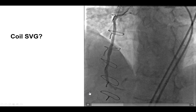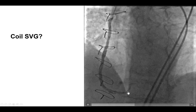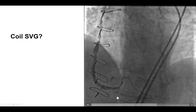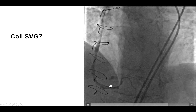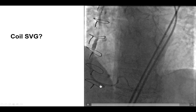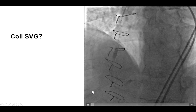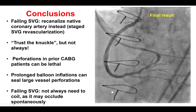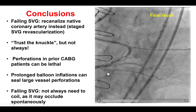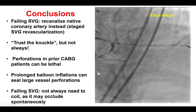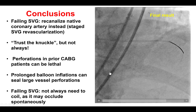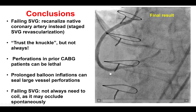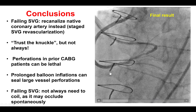We debated about occluding the saphenous vein graft. There was some flow, but not much competitive flow, and there was significant disease in the distal portion of the graft. Therefore, we decided to leave it alone, since we had good antegrade flow into the right coronary artery and the right posterolateral vessel.